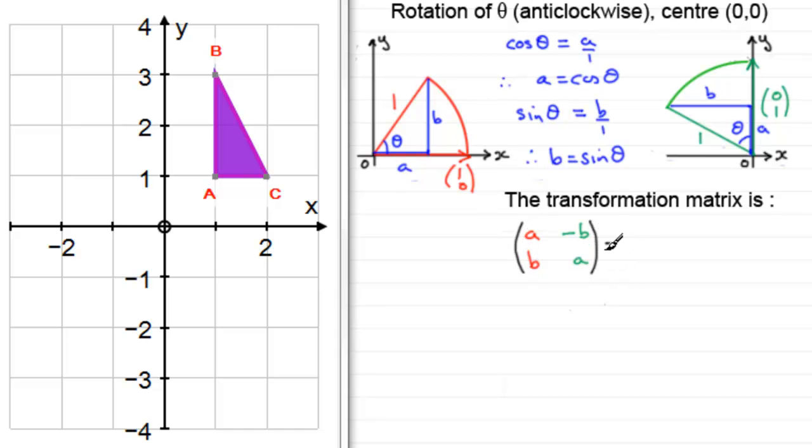Now we can express this in trigonometric functions because we've seen that a is cos theta, so this is equivalent to saying the vector (cos theta, sin theta). For this one over here, we can now write it as -b and a, which is -sin theta and then cos theta.